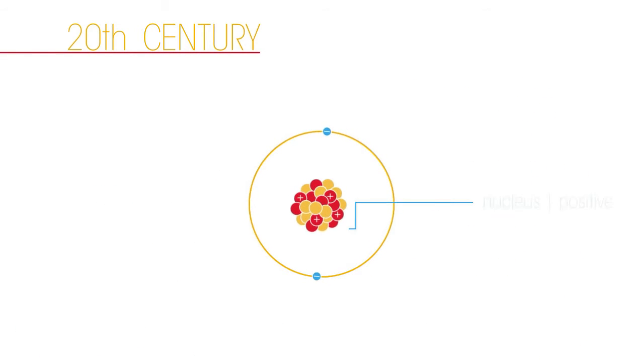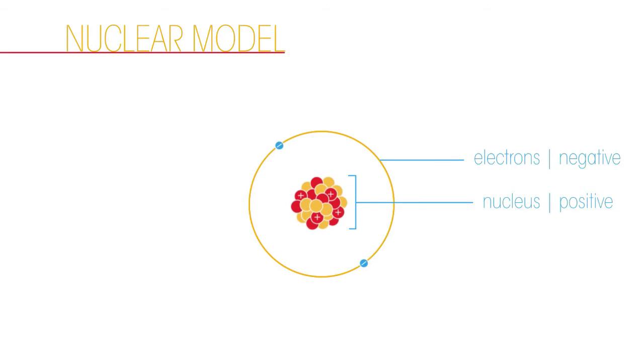Since its discovery, atoms have been described as having a central nucleus of positive charge which is orbited by negatively charged electrons. This is known as the nuclear model of the atom.